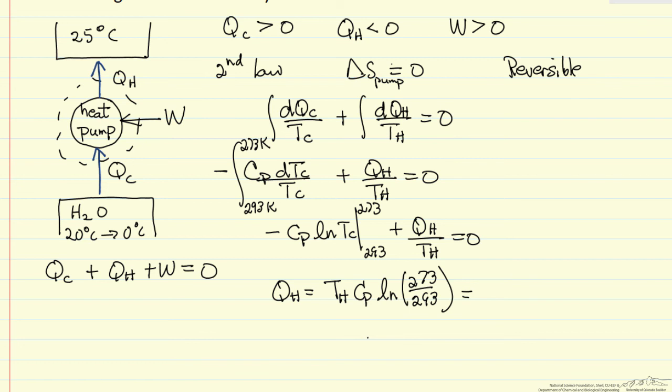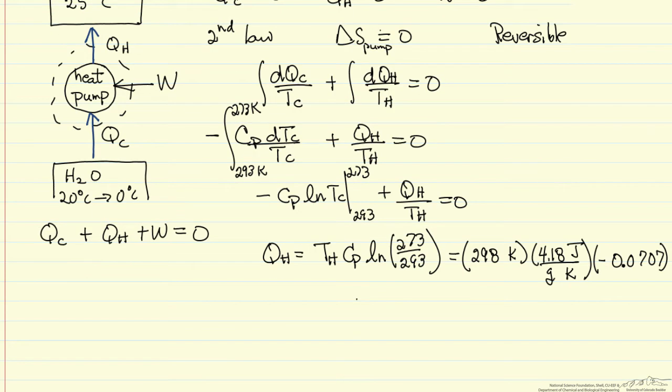Now we can substitute in the values here. So I have evaluated the log term. I used the heat capacity for water in joules per gram per Kelvin. And so I can calculate QH, and it is minus 88.1 joules per gram. So it is negative as we said it should be.